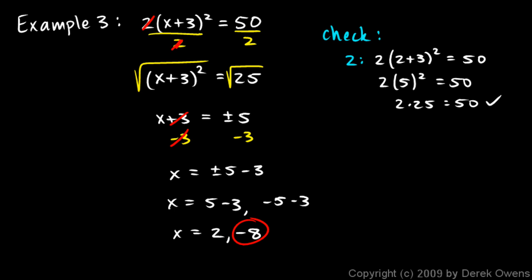Okay, let's check this solution also, the negative 8. So again, I'm going to rewrite my original problem, but instead of the x, I'm going to put in this value of negative 8. So I'm going to write 2 times negative 8 plus 3 squared. That should equal 50.